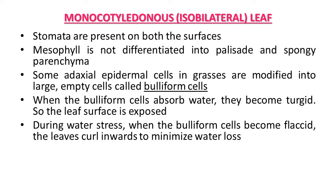In monocot leaf, upper epidermis, lower epidermis, and mesophyll are arranged in between, along with vascular bundles. Some adaxial epidermal cells in grasses are modified into large empty cells known as bulliform cells — a special feature of monocot leaf not present in dicot. When bulliform cells absorb water and become turgid, the leaf surface is exposed and the leaf lamina remains open.